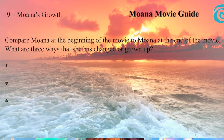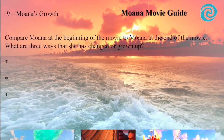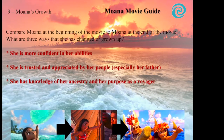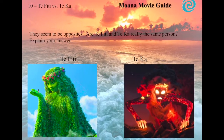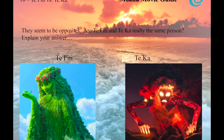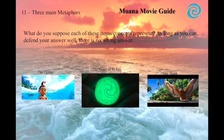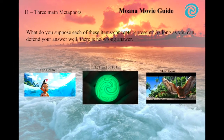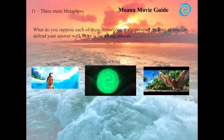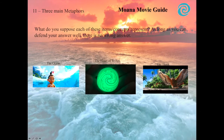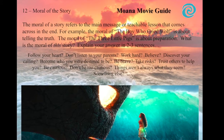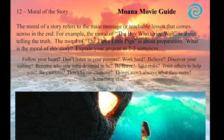Nine: a lesson charting Moana's growth from the beginning of the movie to the end. Ten: a compare and contrast lesson using Te Fidi and Takah. Eleven: a metaphor lesson using three central metaphors in the film — the ocean, the heart of Te Fidi, and Maui's hook. Twelve: a lesson determining the moral, or multiple morals, of the story.